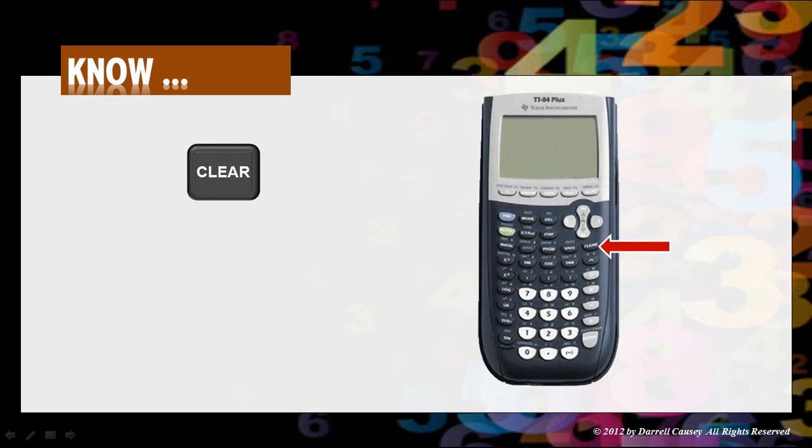We have the clear key over there on the right. We have the delete key. We have the period or decimal. Now that is the negative sign, not the minus sign. Don't use minus for negative. You need to use this key right here.